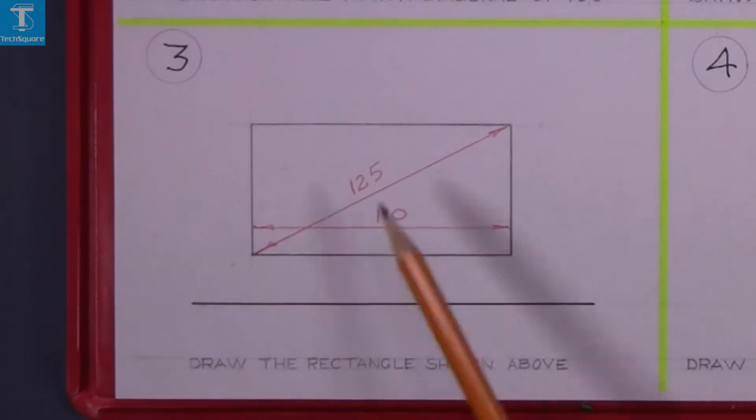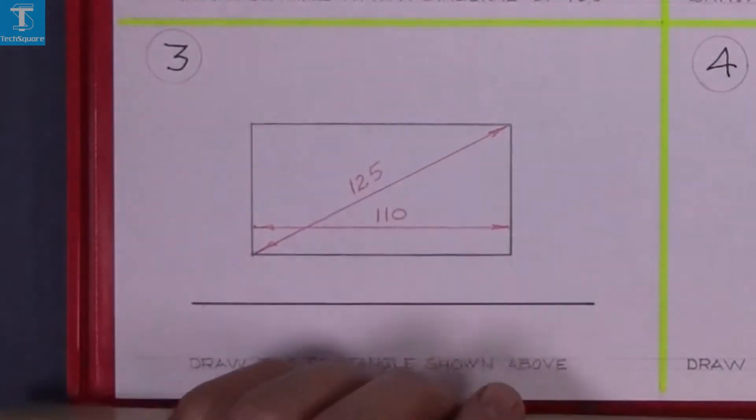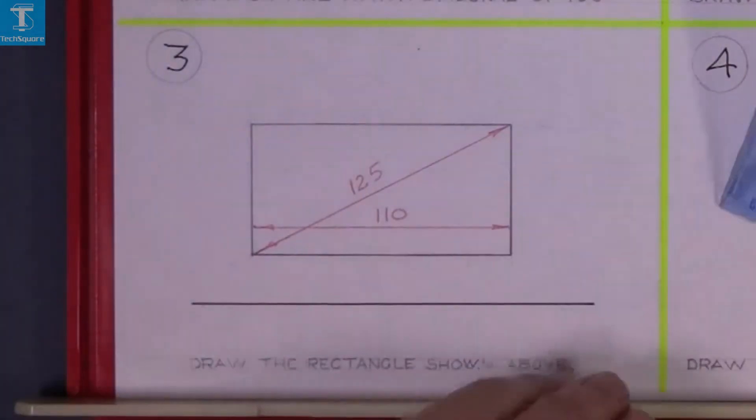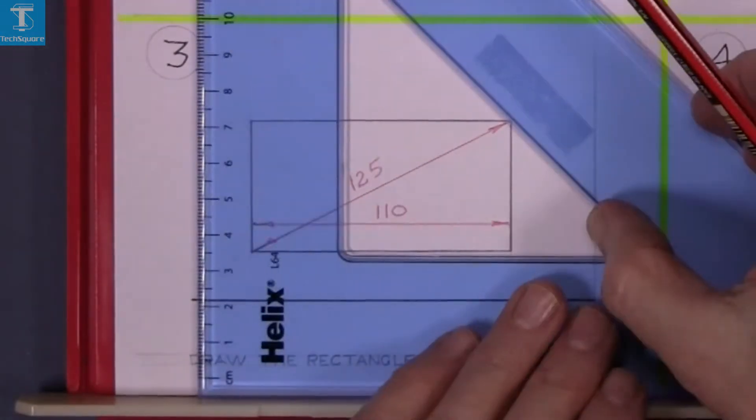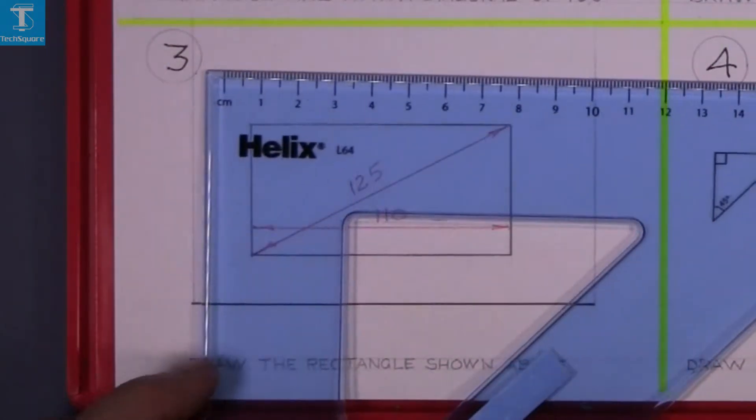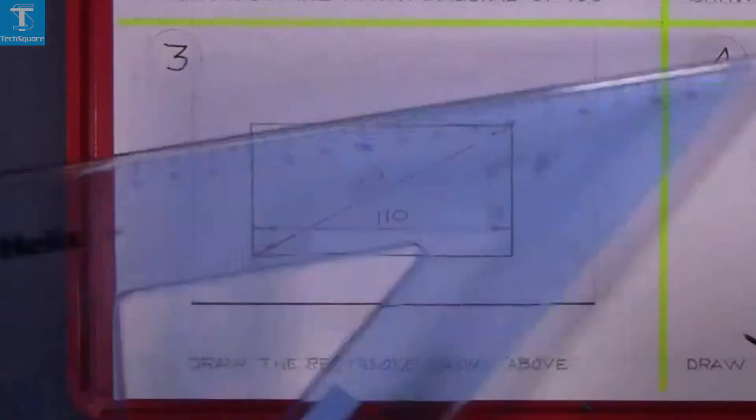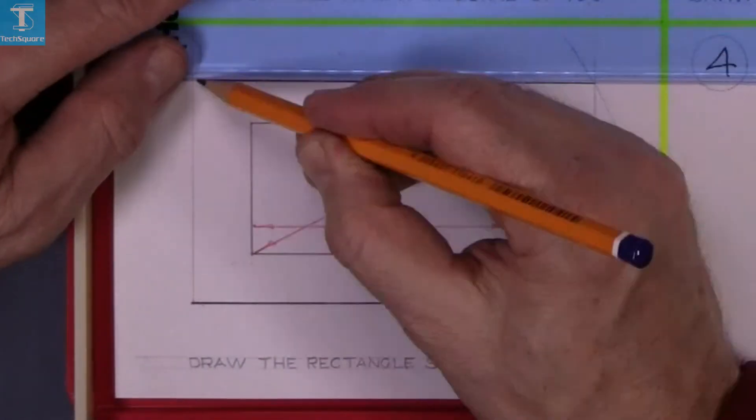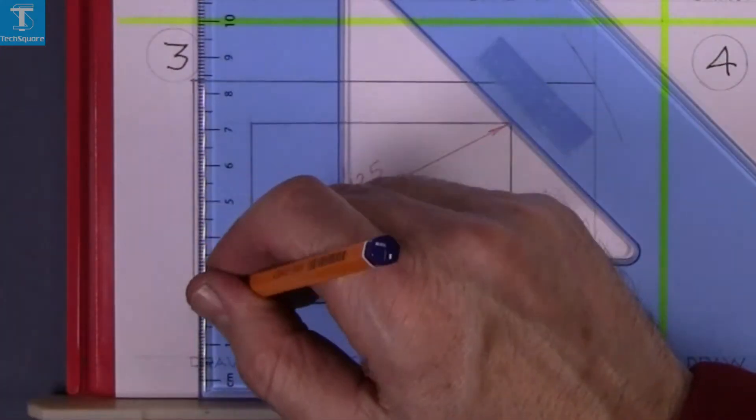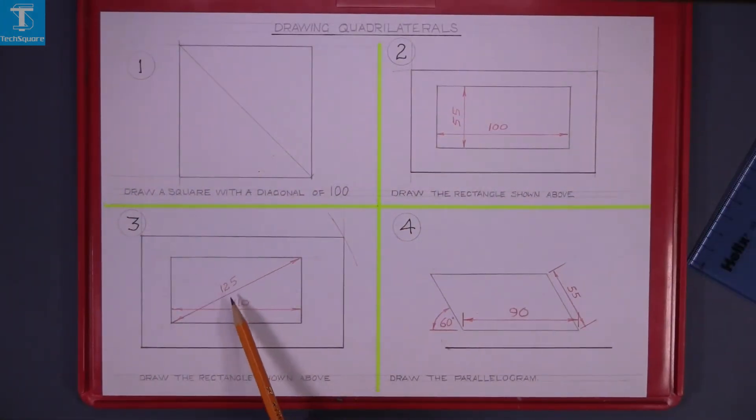So the first job we will do again is draw vertically up through both ends of the base line. And then get the compass set to the length of the diagonal which is 125. Draw an arc and then join across the top and line in your drawing, and that is your rectangle that was required.